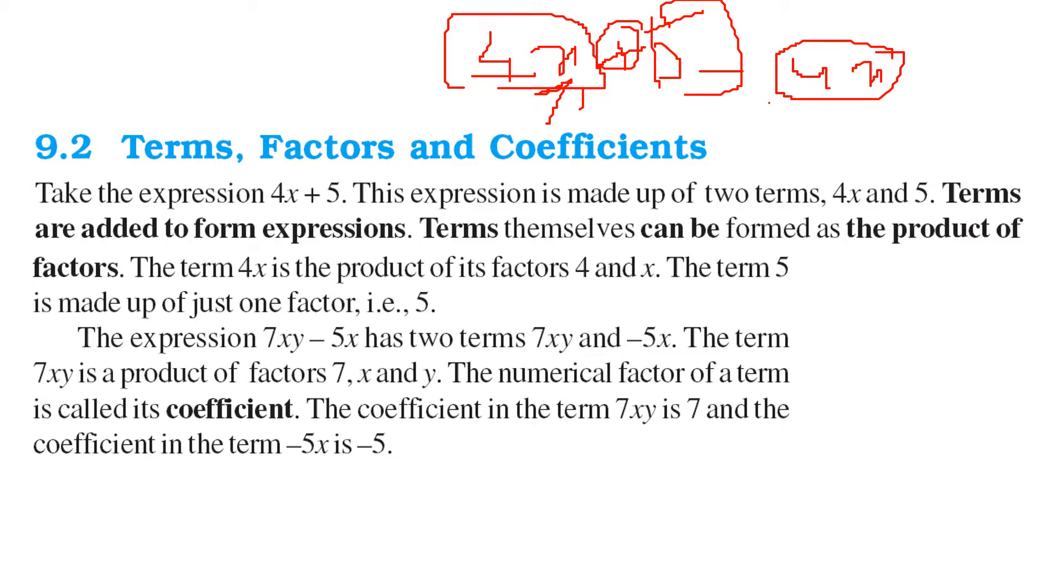But this term is already made of 4 into x. So 4 and x, here 4 is a constant and x is a variable. The 5 is added to 4x. That is, the term 5 is made up of just one factor which is 5. You can say 5 into 1 also. Anything multiplied by 1 will always give you 1.